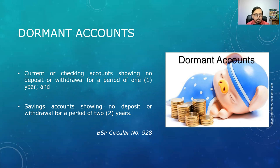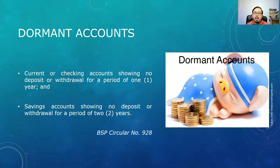For savings accounts, it will take an additional eight years from the time the account became dormant to be considered an unclaimed balance. All you have to do is deduct from the 10-year period required to become an unclaimed balance the year of dormancy — one year for checking accounts and two years for savings accounts. If you want to remove the dormant status from your bank account, simply make a deposit or withdrawal. This will make your account active again.